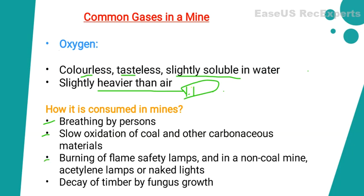Another cause is decay of timber by fungus growth. Timber is used for supporting the roof, and the decay of timber by fungus also requires oxygen. In all these scenarios, oxygen is consumed, leading to the reduction of oxygen concentration in the atmosphere inside the mines. Additionally, mine gases given off from coal and adjacent strata also reduce the overall oxygen percentage in the air.